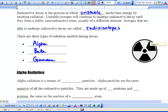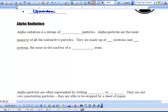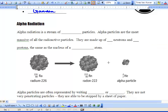The first one we're going to do is alpha radiation. Now, alpha radiation is a stream of alpha particles. Alpha particles are the most massive of all radioactive particles. They're made up of two neutrons and two protons. This is the same as a nucleus of helium atom.